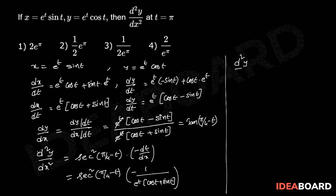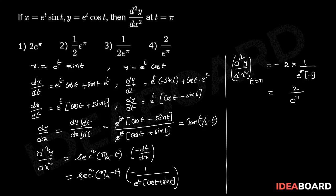Therefore, d²y/dx² at t equals π: substituting gives minus sec²(π/4 minus π) times 1/[e^π times (cos π plus sin π)]. With cos π = -1 and sin π = 0, sec²(-3π/4) equals 2, giving the result 2 divided by e^π. The correct answer is the 4th option.